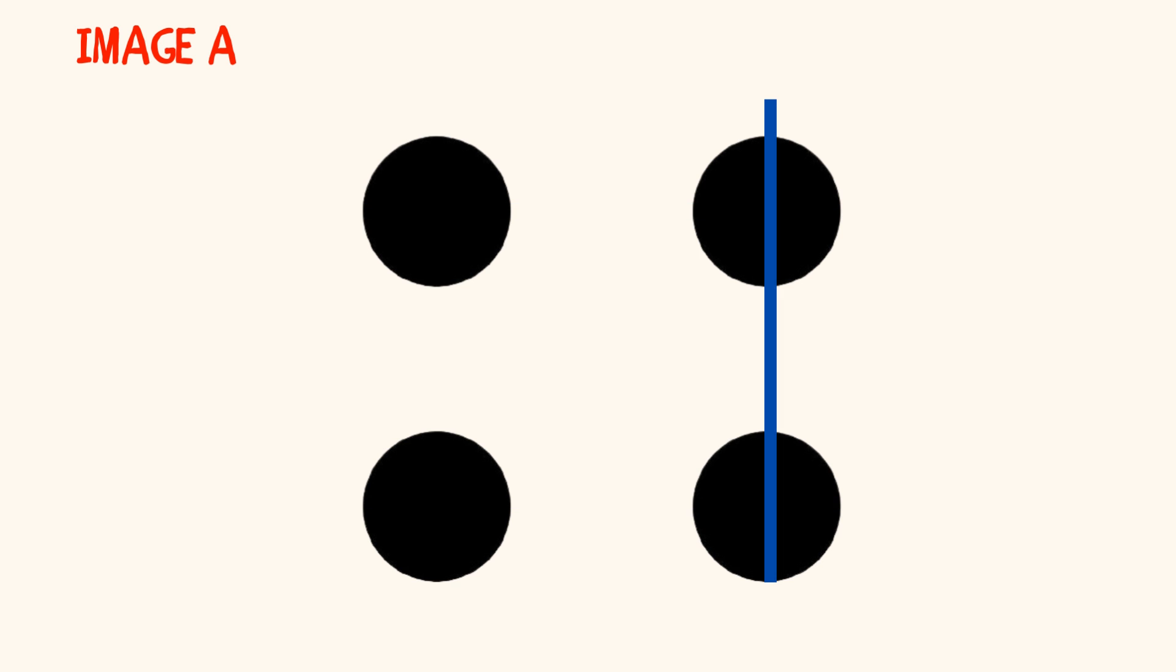Another student might say, I saw two dots on the right and two dots on the left, and two plus two makes four. Again, show this hand signal if you agree. If a student says they saw two dots and two dots and know that makes four, probe and ask where they saw the first two dots, then where they saw the other two.